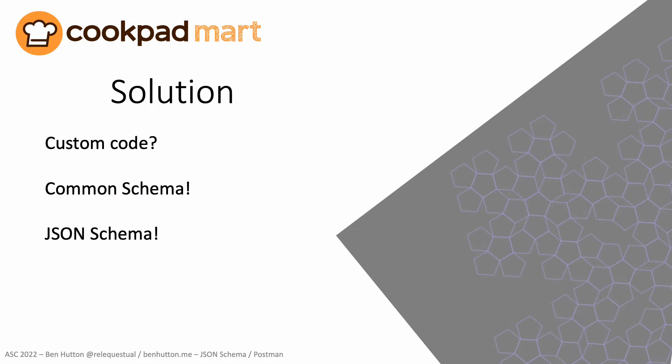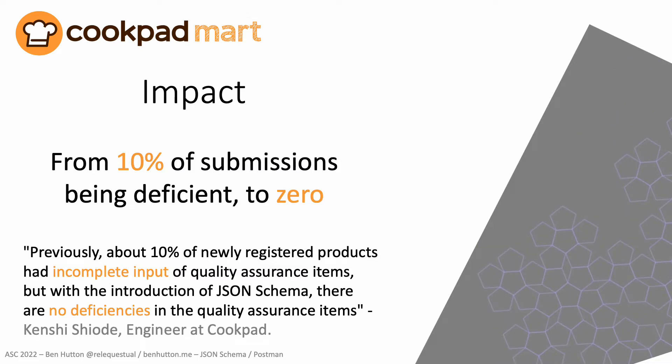They considered continuing to write custom code, but maintainability was fast becoming a concern. Cookpad needed a common schema to contain their form requirements. JSON Schema was ultimately the solution of choice. With JSON Schema, Cookpad reduced deficient food submissions of missing data from 10% to 0%, with all the tricky, complex validation rules encoded into JSON Schema. This also reduced the burden on the in-house manual review team.